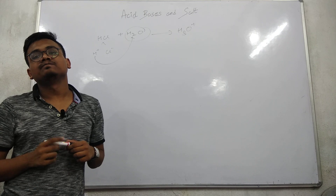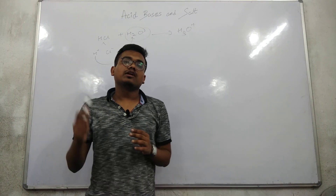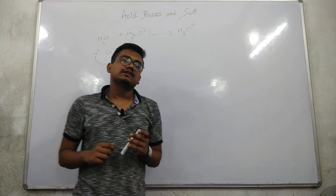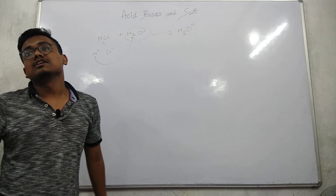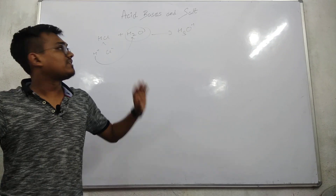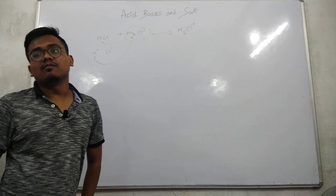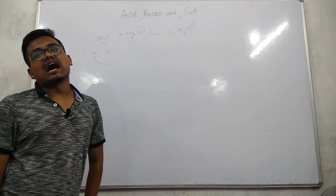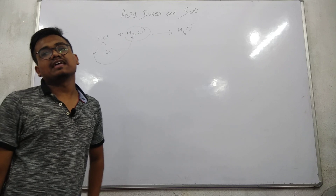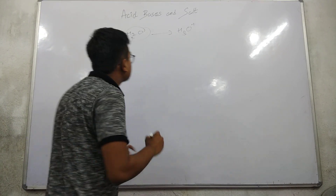The most important thing is alkalis. Soluble bases are alkalis. An alkali is a compound which, when dissolved in water, yields hydroxyl ion as the only negatively charged ion.